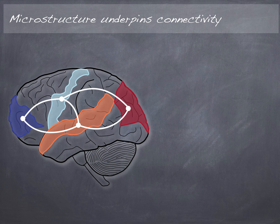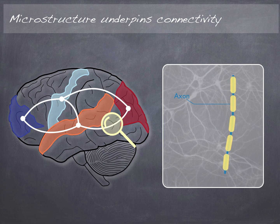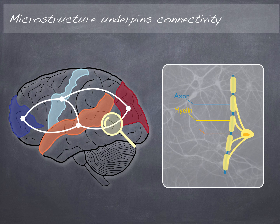The same applies to brain connectivity. When we think about brain connectivity we usually think about the axons — those are the wires of the brain that connect areas to one another. But those axons would not work so well if they were not covered by the myelin sheath. That myelin sheath is a fatty coat that covers the axons and makes the transmission of signals along those axons faster. This myelin is produced by a type of cells called oligodendrocytes.